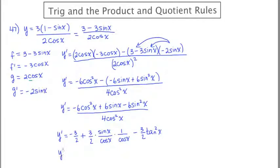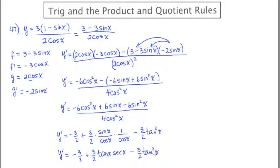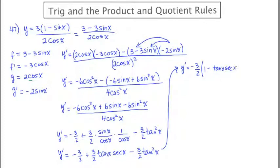Let's see if I can squeeze one more step down here. So this is negative 3 halves plus 3 halves times — sine over cosine is tangent, and 1 over cosine is secant — so we have 3 halves tangent x secant x. Then we subtract negative 3 halves tan squared. There's a 3 halves in everything, so I'm going to factor out a 3 halves. The derivative is now negative 3 halves times the quantity 1 minus tan x secant x plus tan squared x.